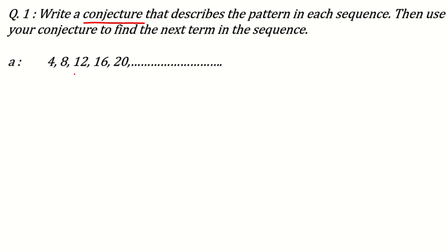So 4, 8, 12, 16, 20. What you can see here, what pattern we are following. Difference of these two numbers is 4. Then difference of another two numbers is also 4. So what you can see here, difference of every term is plus 4. So every term is increasing by 4. So next term also will increase by 4. So it will be 20 plus 4 means 24. So what is the conjecture here? Conjecture is that every term is increasing by 4. Like this, you can find the next term.